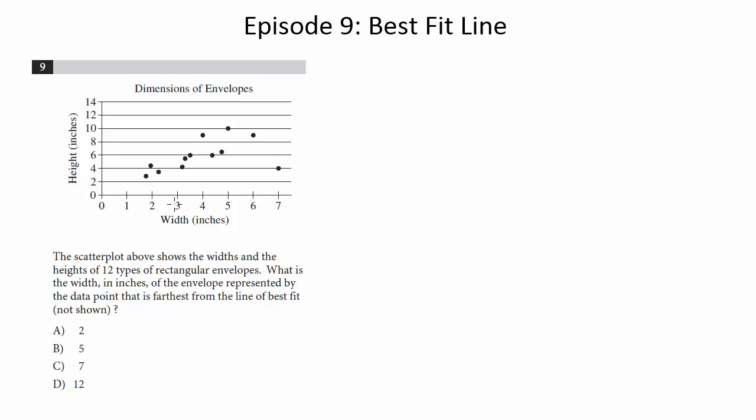The scatterplot above shows the widths and heights of 12 types of rectangular envelopes. What is the width in inches of the envelope represented by the data point that is farthest from the line of best fit, which is not shown.